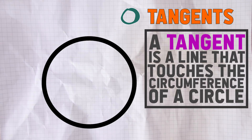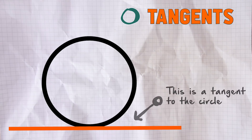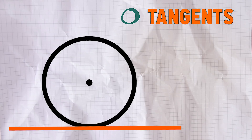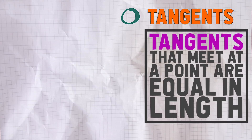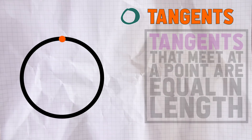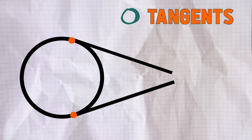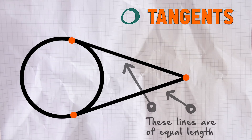Tangents. A tangent is just a line touching the circumference of a circle — you can see an example there. And if you take a line from the centre of the circle, in other words a radius, it will meet the tangent at 90 degrees. Tangents that meet at a point are equal in length. If you take two tangents from the circle and they meet up at a point as they do here on the right hand side, those two lines will always be the same length.